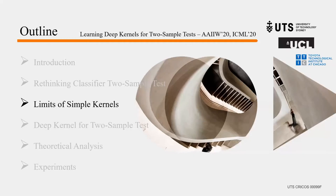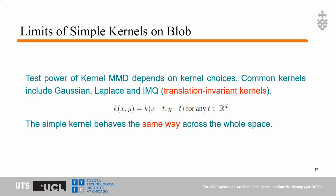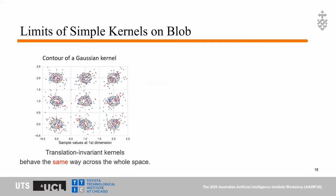The test power of kernel MMD depends on the kernel choice. Common kernels used in the literature — including the Gaussian kernel, Laplacian kernel, and IMQ kernel — are all translation-invariant kernels. In translation-invariant kernels, subtracting the same value from both x and y leaves the kernel value unchanged. This means the simple translation-invariant kernel behaves the same way across the whole space, which is not the optimal way to detect differences between two samples. As shown by the Gaussian kernel contours, all contours look the same across the entire space.